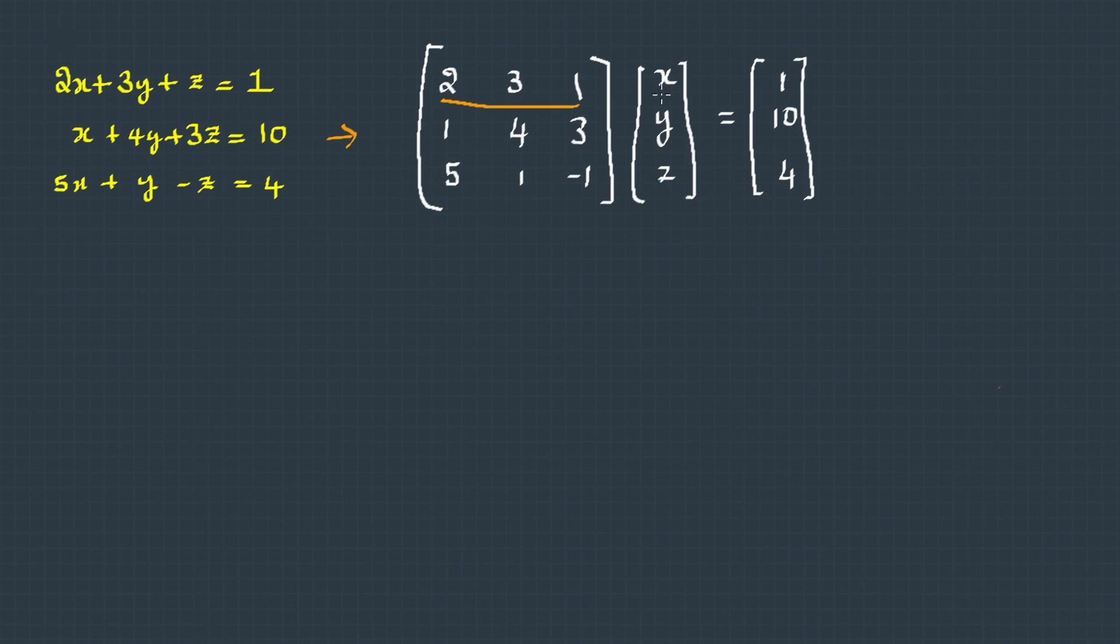Taking the first row with the column, this could be written as 2X + 3Y + Z, and this product gives us 1. This is basically this equation. Similarly, the second row gives the second equation, the third row gives the third equation.